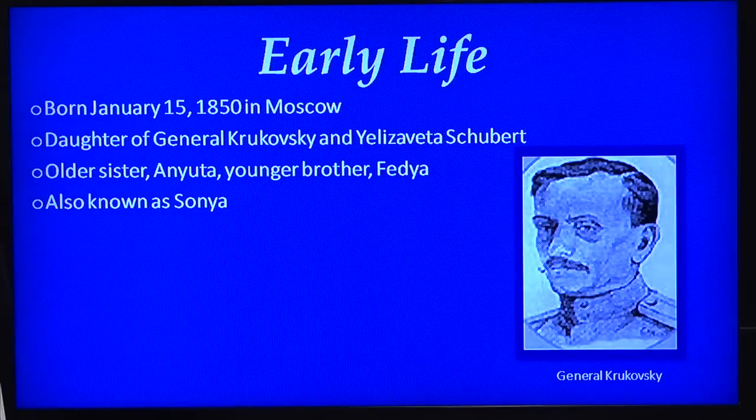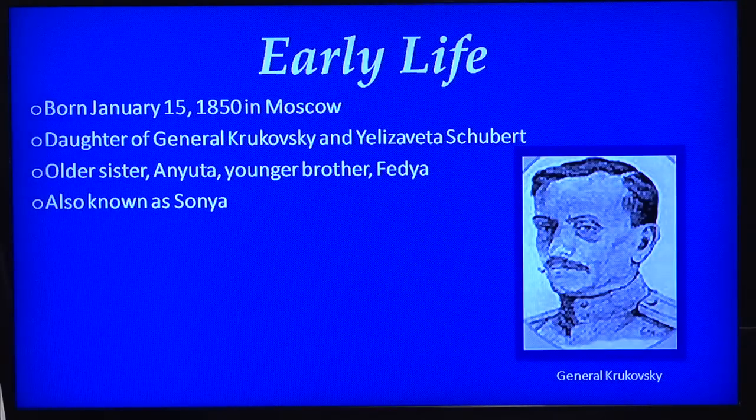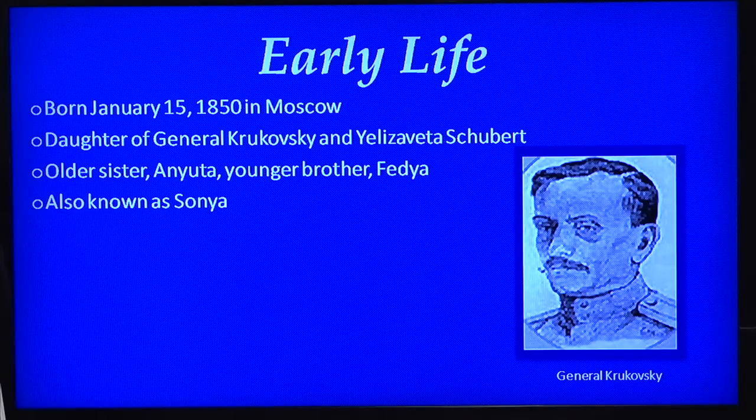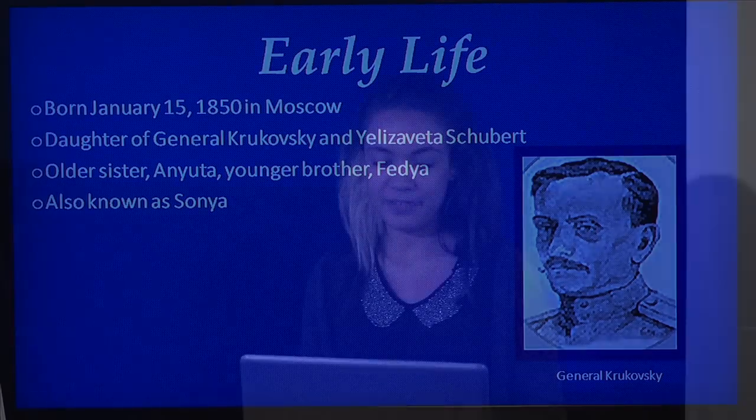She was also known as Sonia. She was the daughter of the general Kukrovsky. And she had an older sister, Aniuta, and a younger brother, Fetya. She was born in January in 1850 in Moscow, Russia.